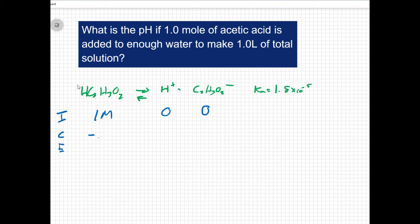So this is going to decrease by some amount minus x. Because it's a 1 to 1 ratio, we're going to increase by the same amount. So I'm going to end up with 1 minus x, x and x.